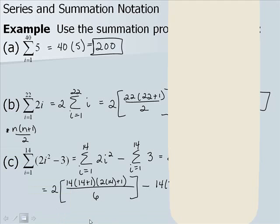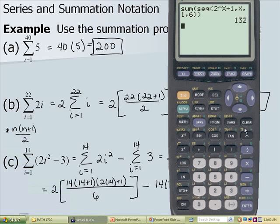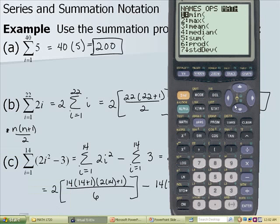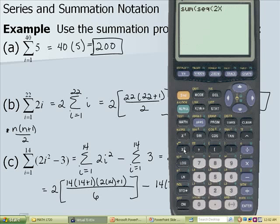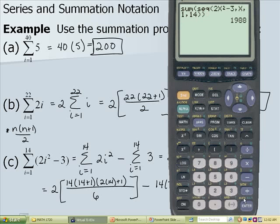We can also get this value using the calculator. Press second stat, go to math, hit 5 for sum, then second stat, ops, number 5 for sequence, and enter 2 times x squared minus 3, comma x, comma 1 to 14. We see that we get our value of 1,988.